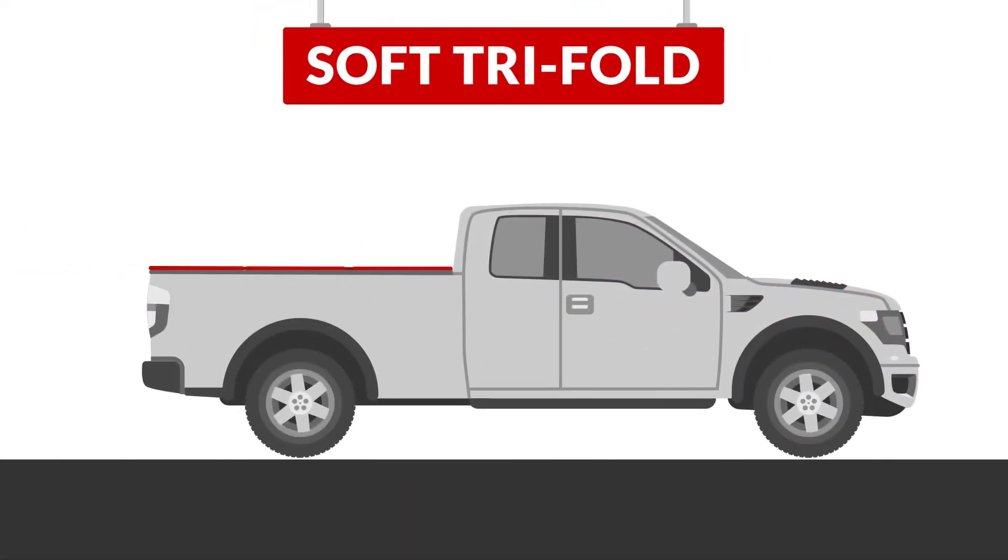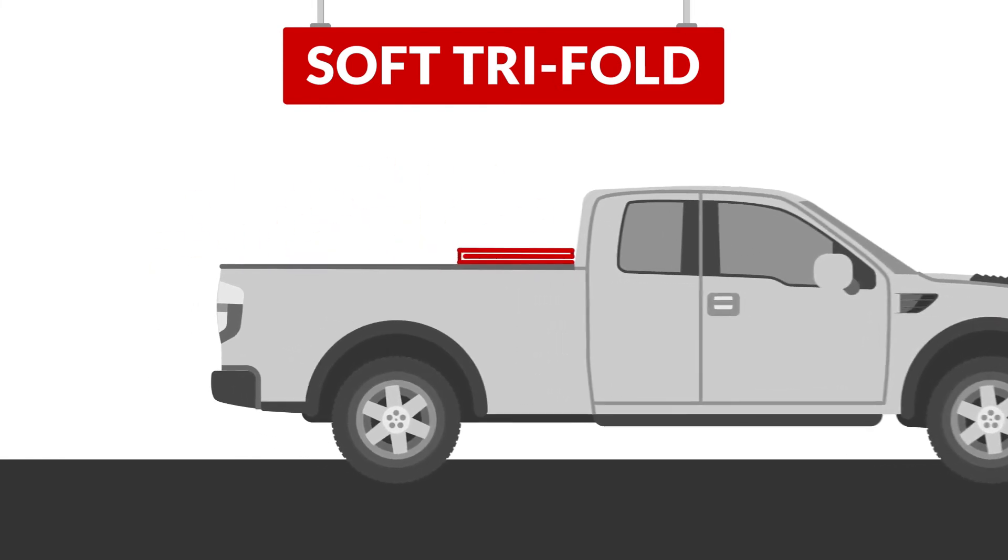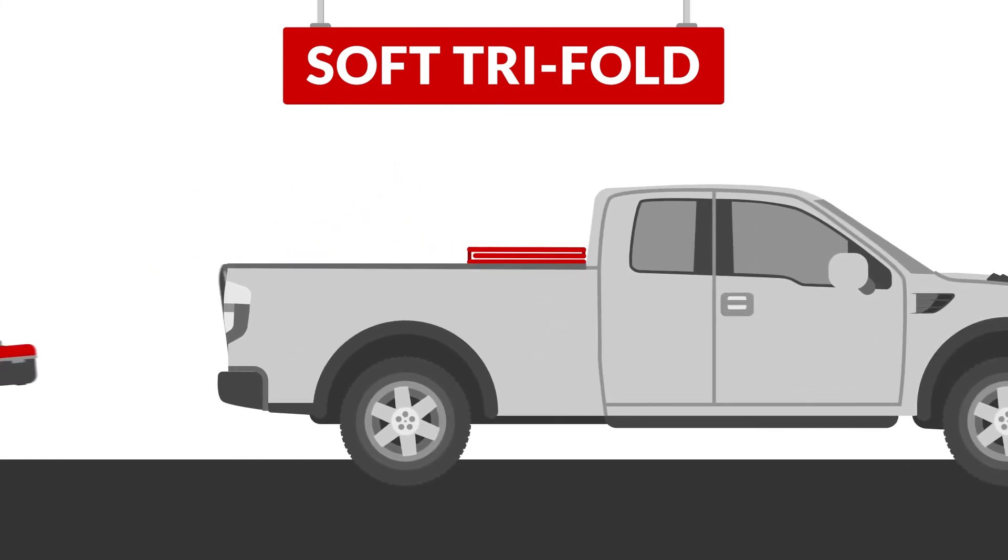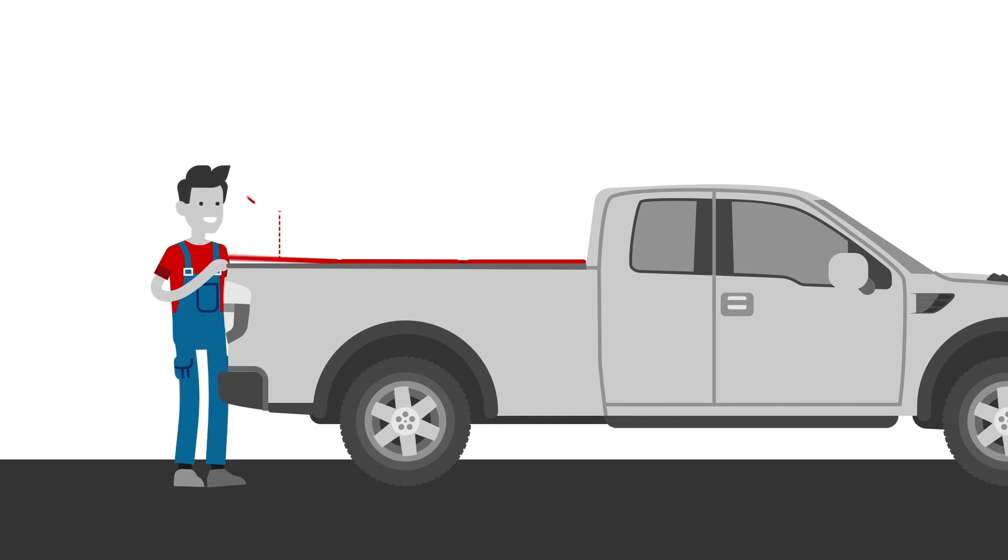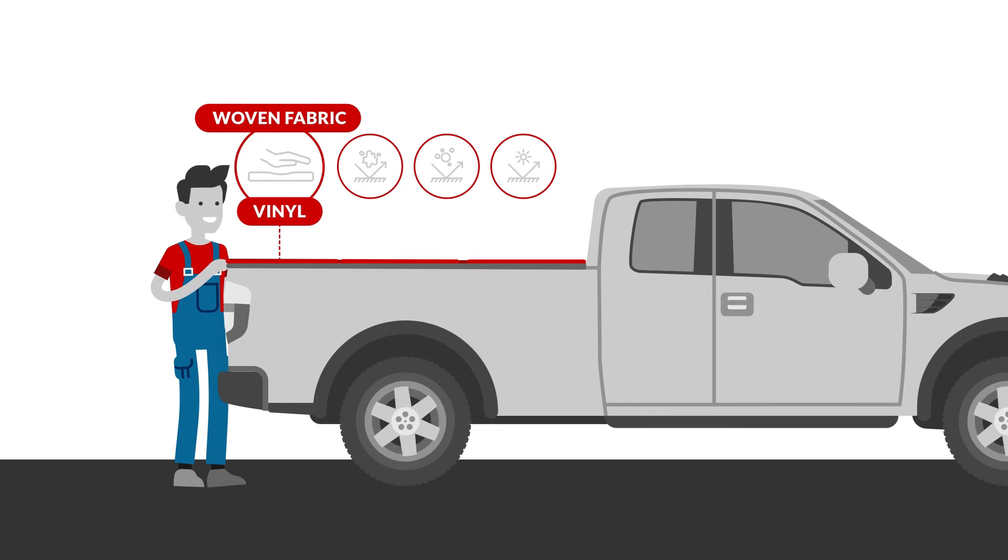Soft tri-fold tonneaus are segmented into three seamless hinged panels that fold up, making it easy to access your truck bed without removing the cover entirely. Most soft tri-folds are vinyl, while others are made from rugged woven fabric. Both materials are specifically designed to resist dirt, dust, and sun damage.